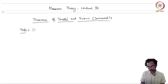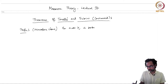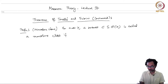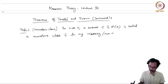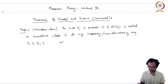Let me first define what is a monotone class. For a set X, a subset C of the power set of X is called a monotone class if, for any increasing or non-decreasing sequence E1 ⊆ E2 ⊆ ... — a countable sequence of non-decreasing sets — we have the union of Ej, j equal to 1 to infinity, belongs to C.